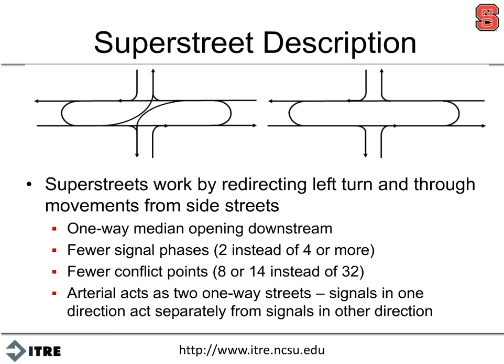Basically we redirect the left turn and through movements on the side streets. The biggest plus is that we have fewer conflict points, which is a great safety benefit that we're going to quantify in this project. But really the best benefit is that it acts like two one-way streets. When north-south or east-west is the predominant movement, you catch those lights perfectly as you go through and get nice progression. This acts like two one-way streets — there might as well be a set of skyscrapers right through the median.